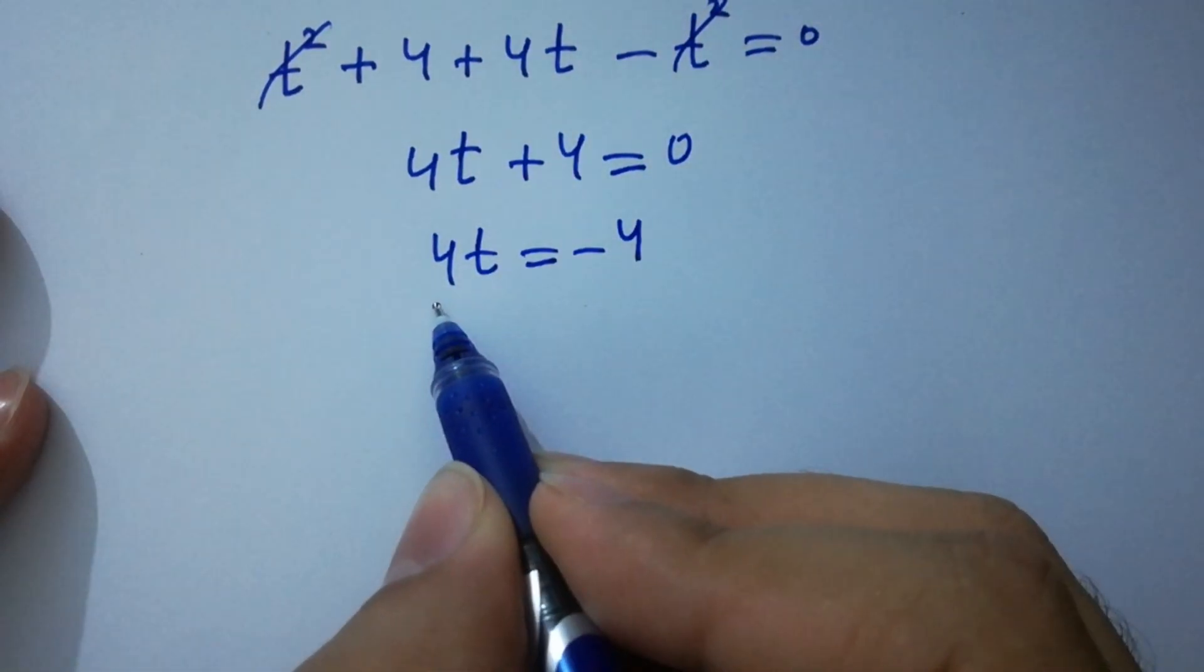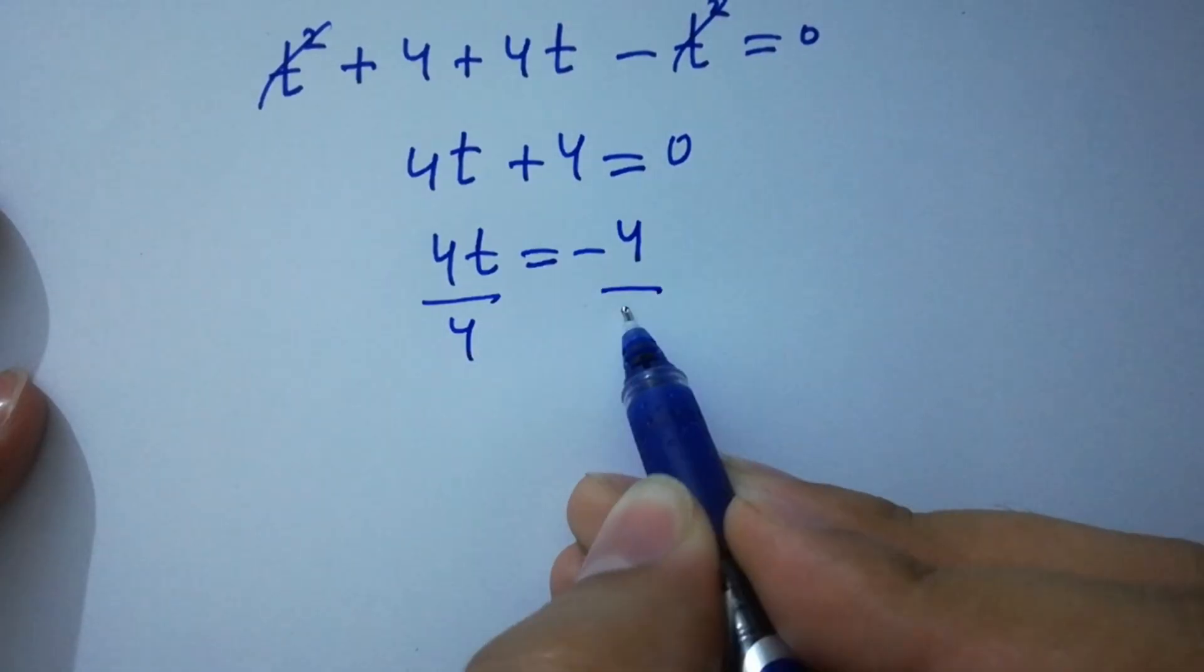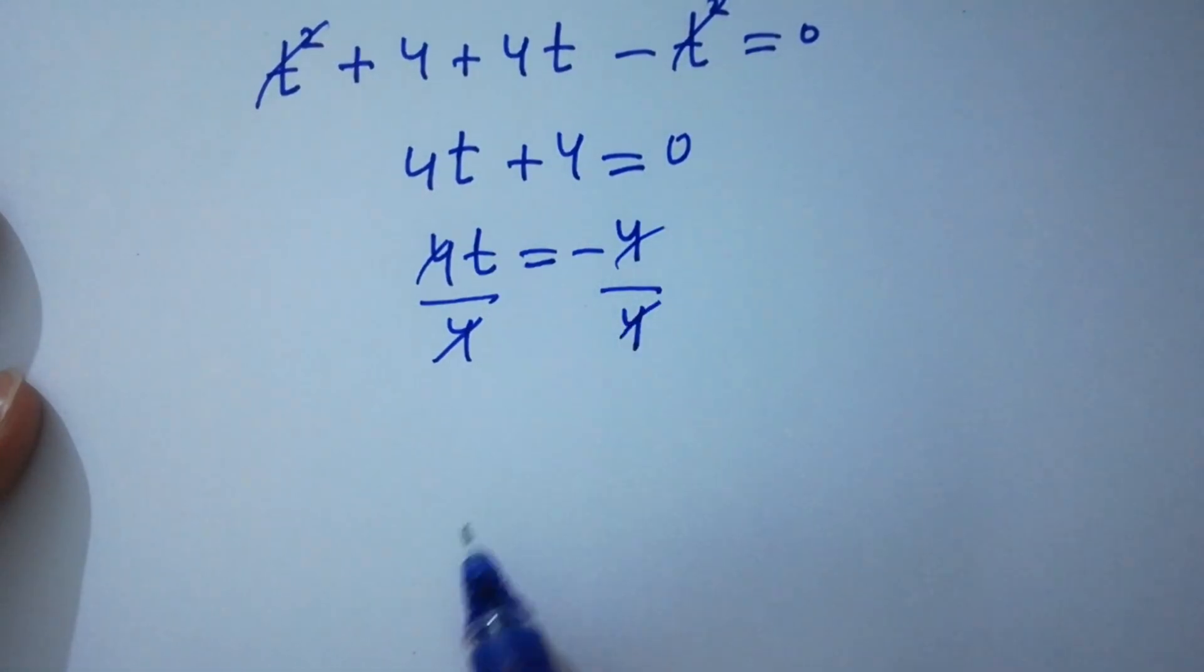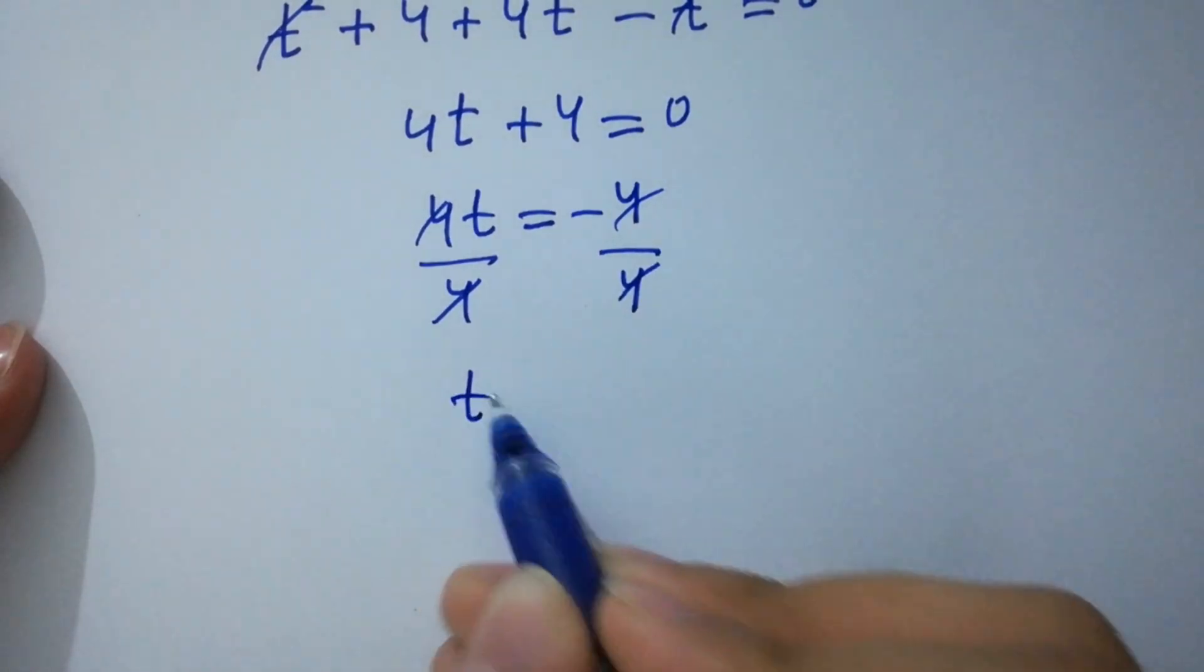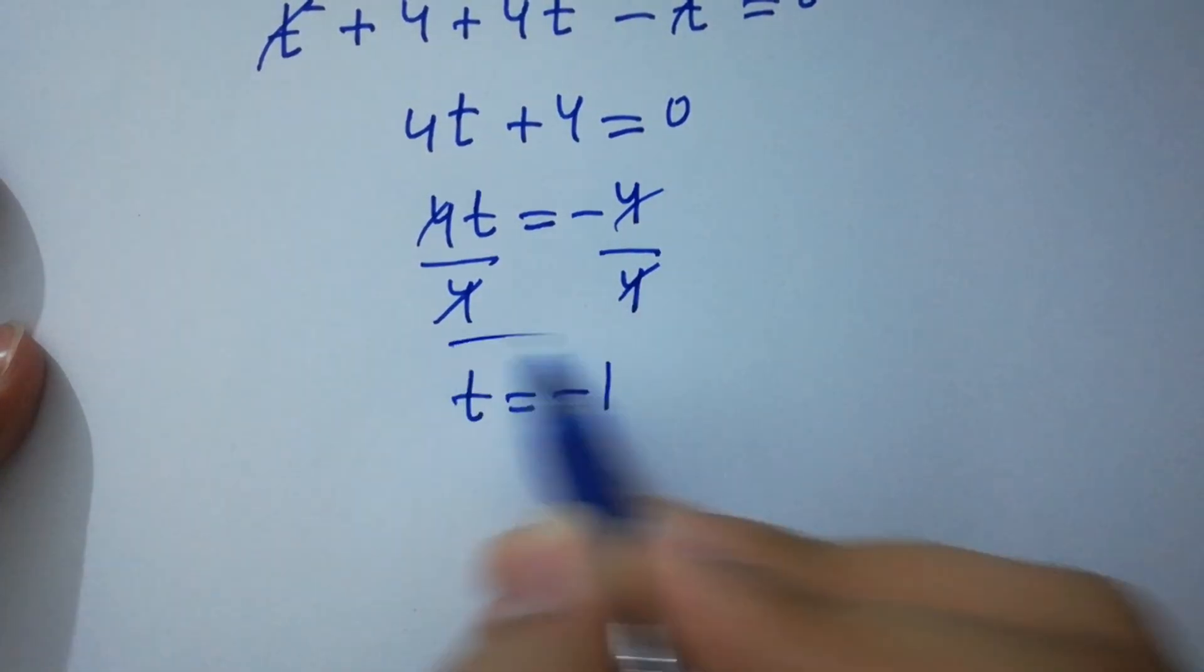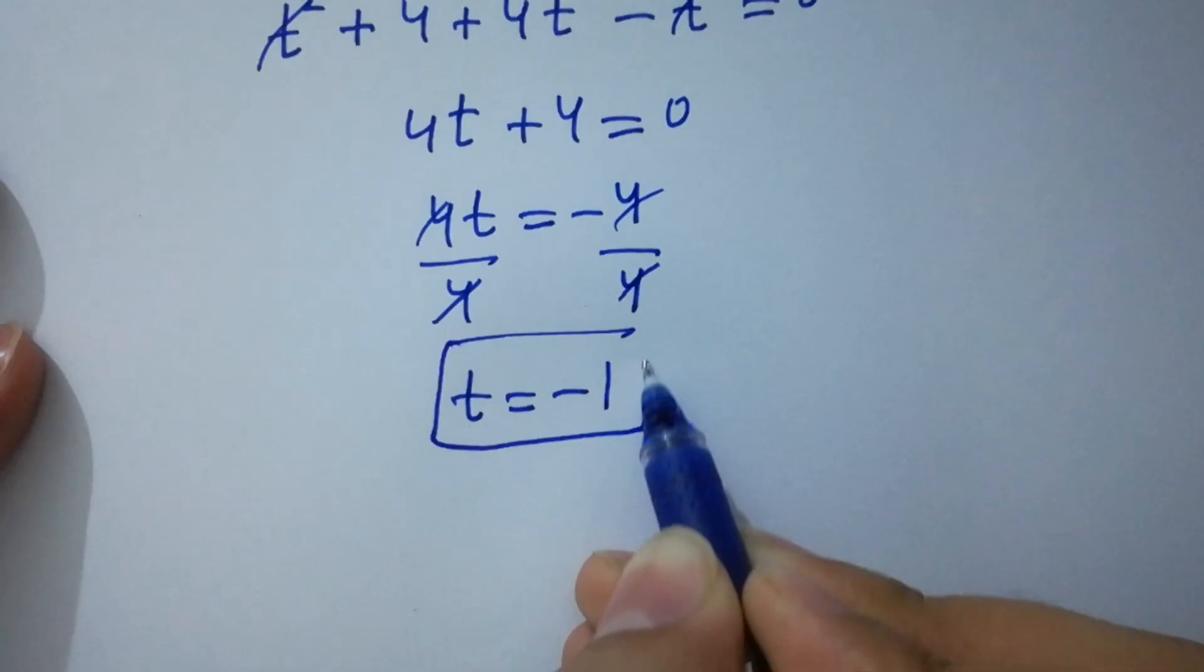Divide by 4 on both sides, 4 and 4 cancels. We get t equal to minus 1 which is the value of t.